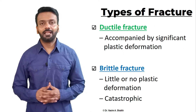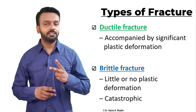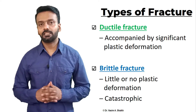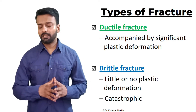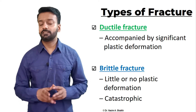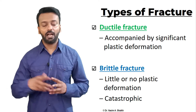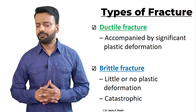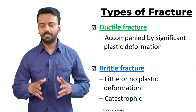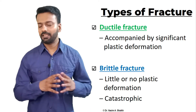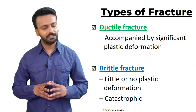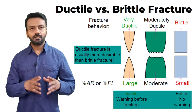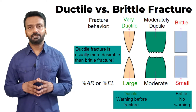What are the different types of fracture? There are basically two types of fracture: ductile fracture and brittle fracture. Ductile fracture is accompanied by a lot of high plastic deformation, and in brittle fracture there is little or no plastic deformation and the material fails catastrophically. Let us compare ductile and brittle fracture.